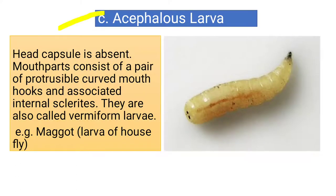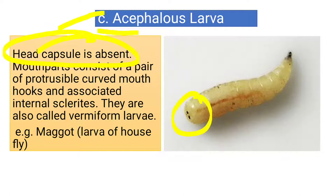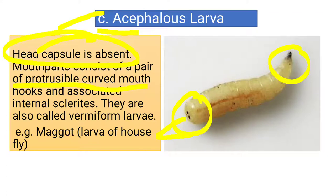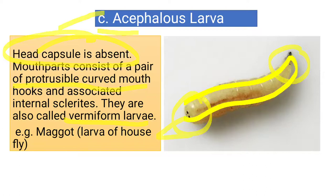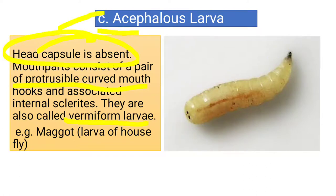Third is the acephalus larvae. Here, the head capsule is totally absent — only eye spots are visible. The mouthparts are in the form of two hooks which are protrusible; during feeding these hooks are pushed out and in through a protrusible mechanism. This type of larvae is also called vermiform larvae because it resembles the shape of a worm. The maggot of the house fly is an acephalus larva.